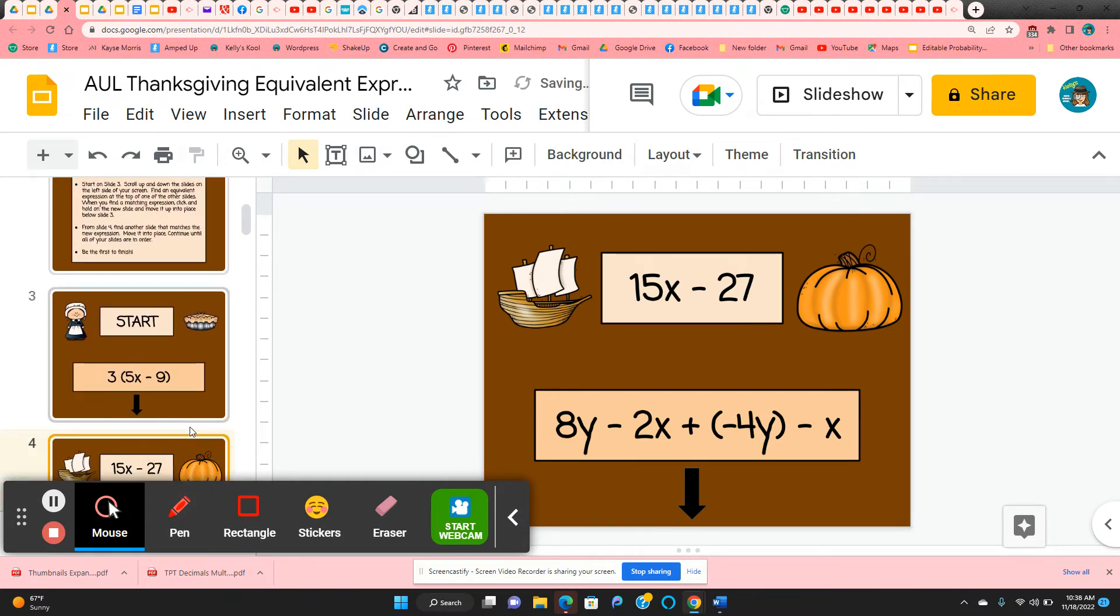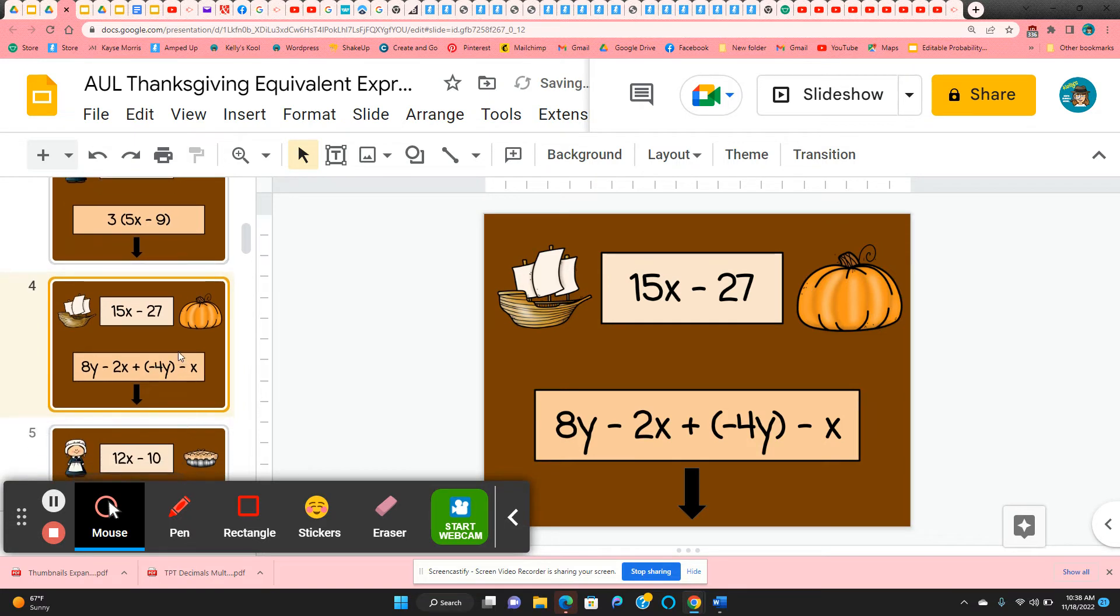So they're going to move it underneath that first slide. Now they're going to take the slide they just moved. They've got a new problem. So here they're looking for 4y negative 3x.